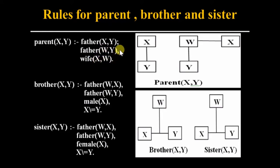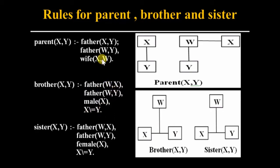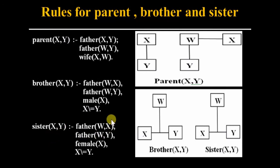X will be the brother of Y if W is the father of X as well as the father of Y, and X is male and X is not equal to Y. So: brother(X,Y) :- father(W,X), father(W,Y), male(X), X \= Y. Similarly for sister, the rule is the same but X must be female: sister(X,Y) :- father(W,X), father(W,Y), female(X), X \= Y.